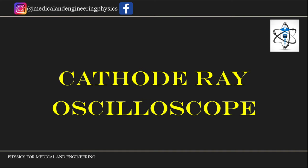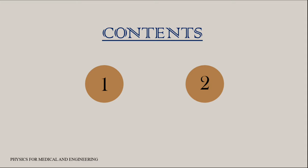Hello everyone, welcome to YouTube channel Physics for Medical and Engineering. Our today's topic is Cathode Ray Oscilloscope. Oscilloscope is an electronic equipment which displays a voltage waveform. Among the oscilloscopes, Cathode Ray Oscilloscope is the basic one and it displays a time-varying signal or waveform. In this video, let us discuss the block diagram of CRO.